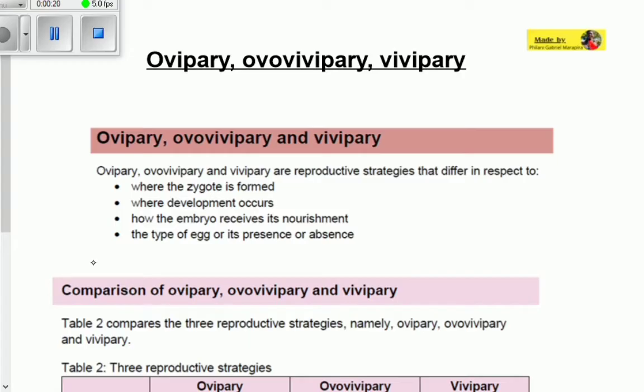So we have got these three terms: oviparous, ovoviviparous, and viviparous. How do we differentiate those three things? Because we must have differences between them. So let's see on what criteria we base our differences.